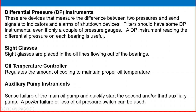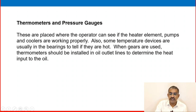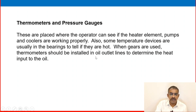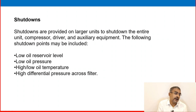An oil temperature controller is included — if oil temperature is too high, it may trigger a compressor shutdown. Auxiliary pumping instruments sense failure of the main oil pump and quickly start the second or third auxiliary pump using a power failure or loss of pressure switch. Thermometers and pressure gauges are placed where operators can monitor heater elements, pumps, and coolers. Temperature devices are usually installed in the bearings, and thermometers should be on gear oil outlets to determine heat input.